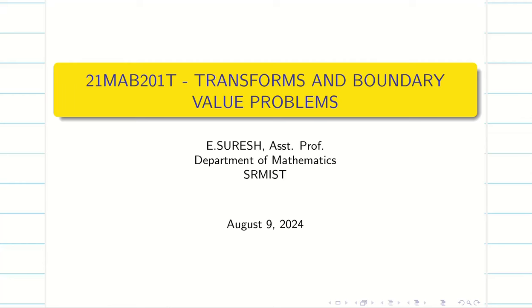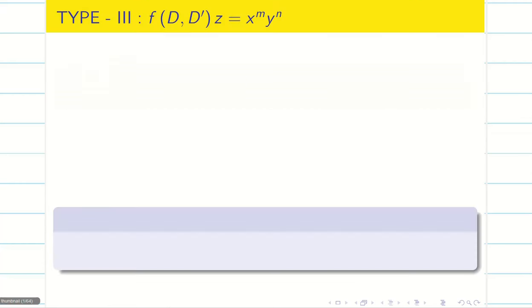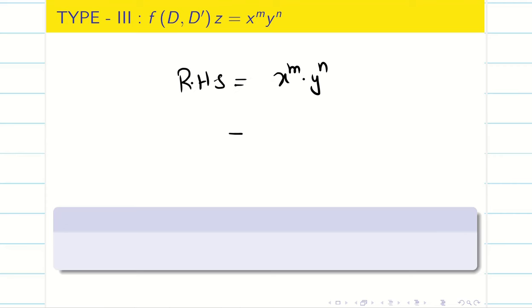Dear students, today's session we are going to see how to solve a homogeneous linear partial differential equation with constant coefficients whose right hand side is x power m into y power n. We know that z is a function of x and y, where x and y are independent variables.